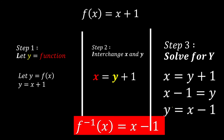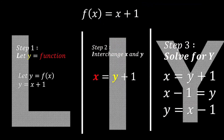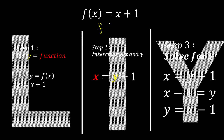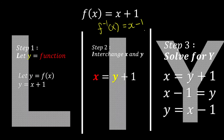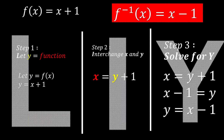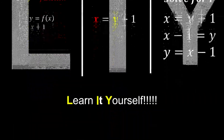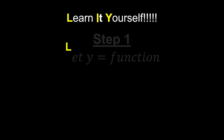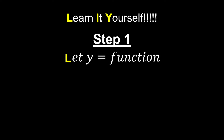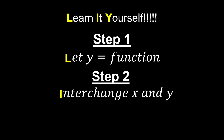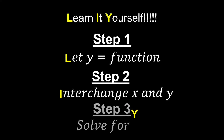Since inverse functions are represented with a power of negative 1, we can say that f inverse of x equals x minus 1. To recap the L-I-Y method: L means let y equal the function; I means interchange x and y; Y means solve for y. That's all for inverse functions.